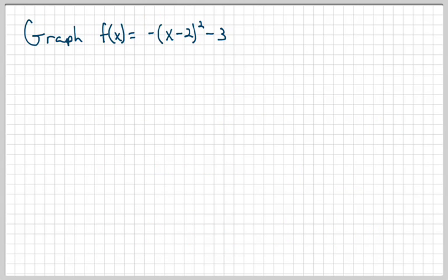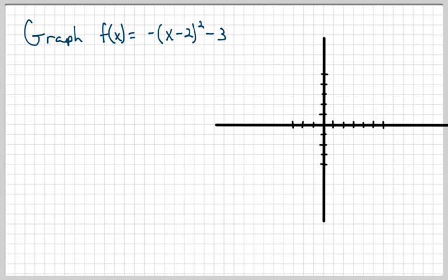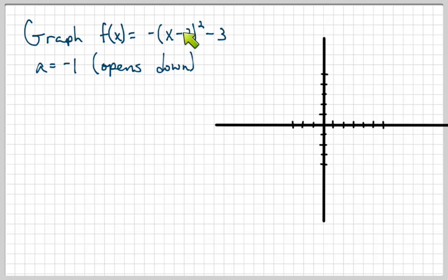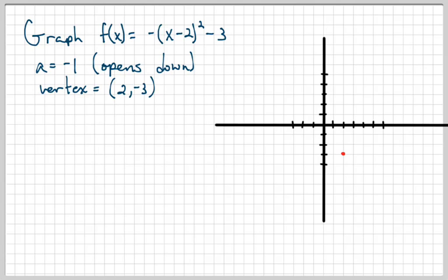Now we're going to graph a parabola: negative x minus 2 squared minus 3. In this case A is negative 1, which tells us the parabola opens down. Our H comma K would be 2 comma negative 3. Remember the standard formula has x minus H, so the minus belongs to the formula and 2 is our H. The vertex is 2 comma negative 3, plotted on the graph — that's where the parabola will bend.